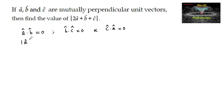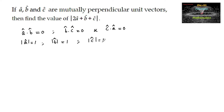Since a, b, c are unit vectors, |â| = 1, |b̂| = 1, and |ĉ| = 1. Now consider |2â + b̂ + ĉ|².